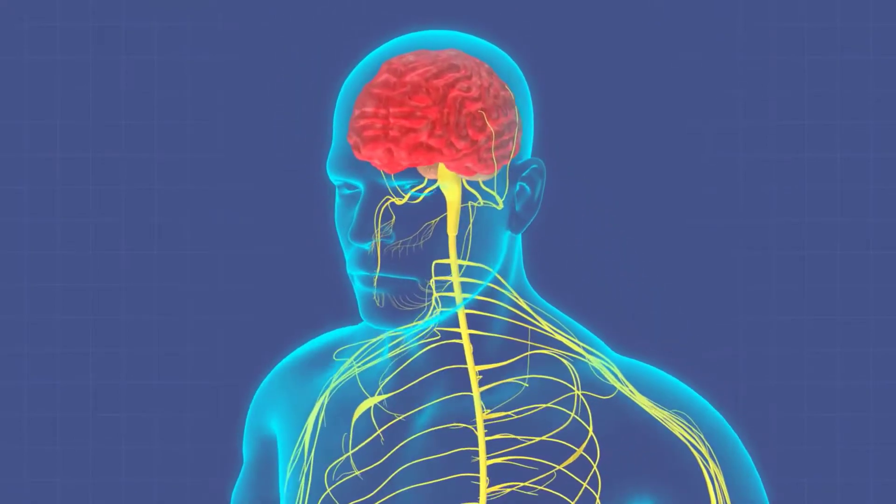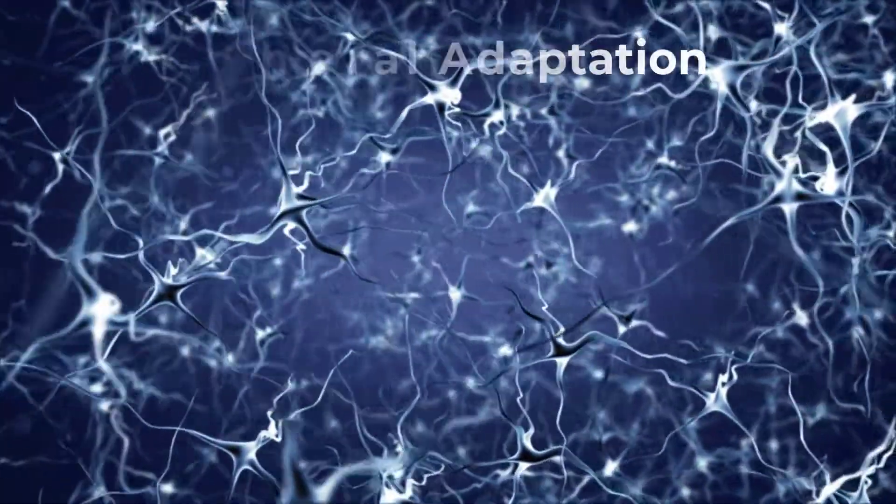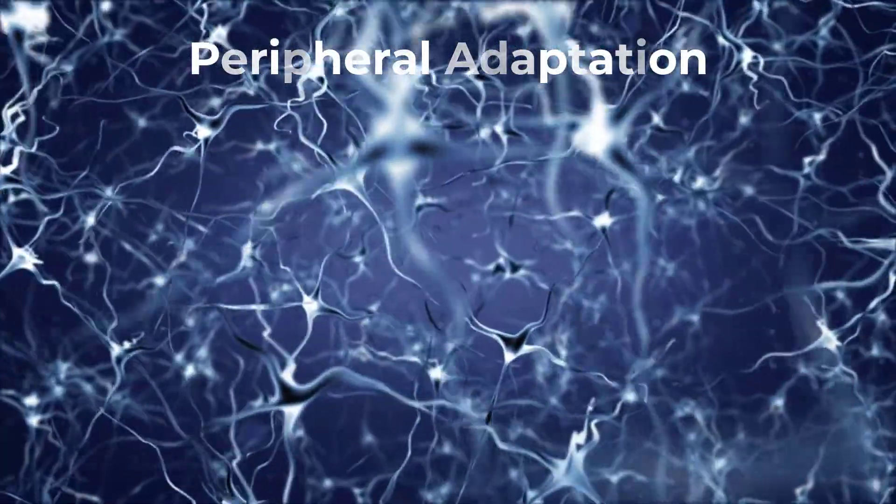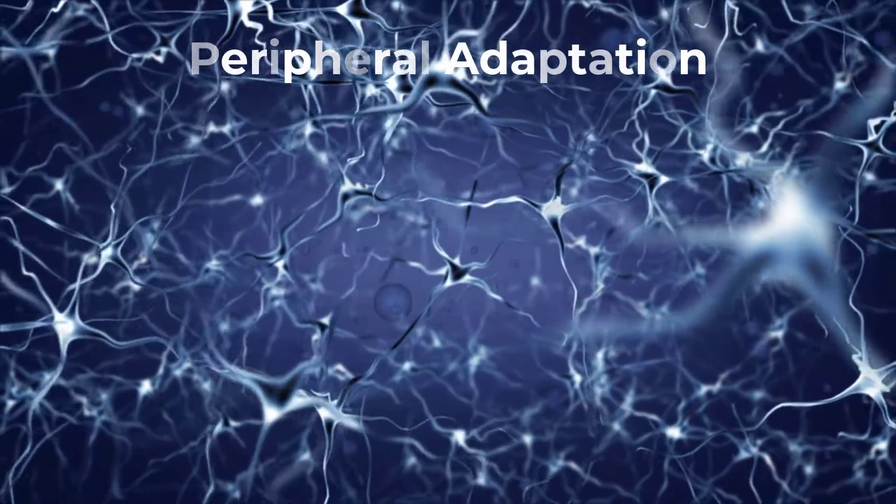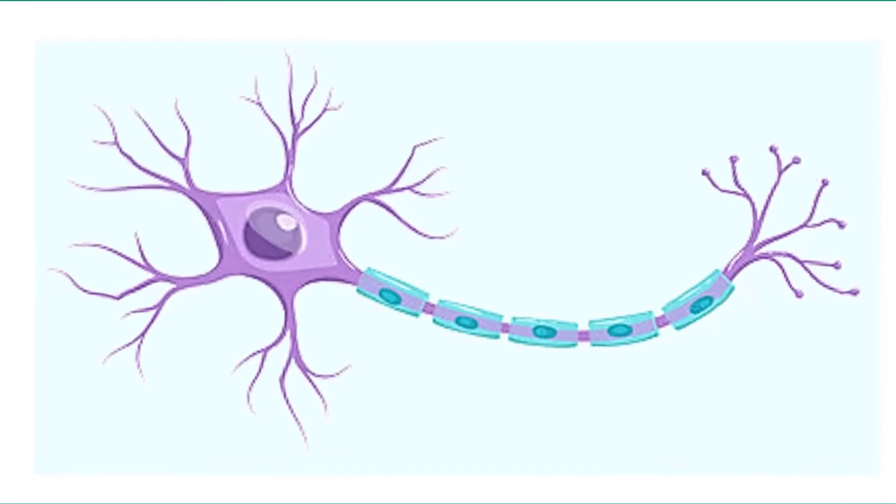There are both peripheral adaptations and central adaptations. Peripheral or sensory adaptation is when a receptor or sensory neuron alters its level of activity. The receptor responds strongly at first,